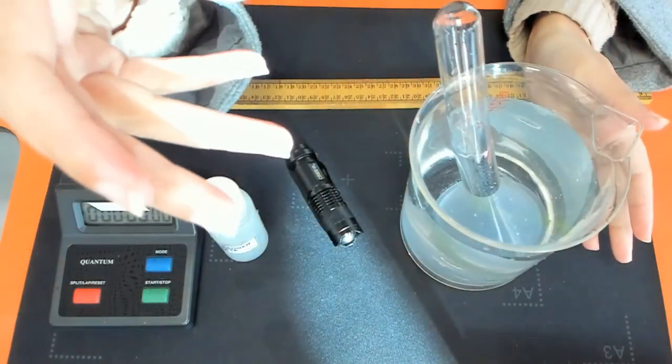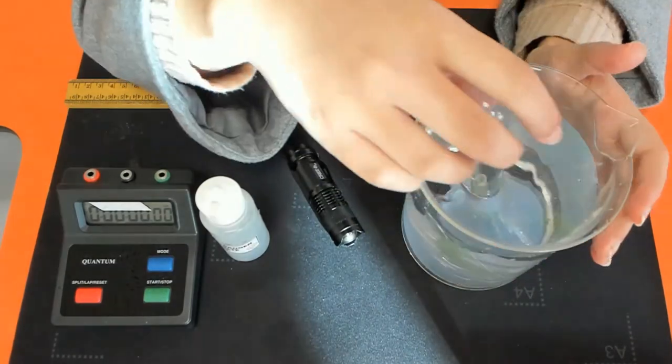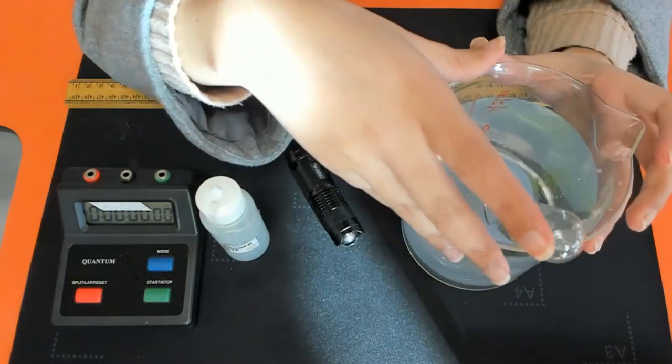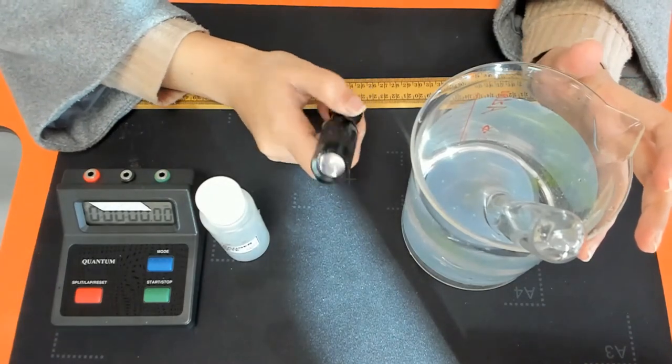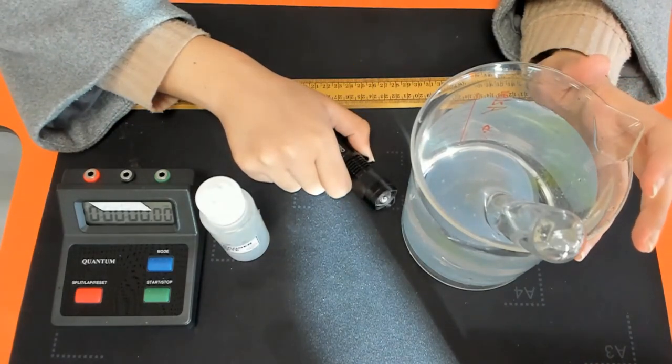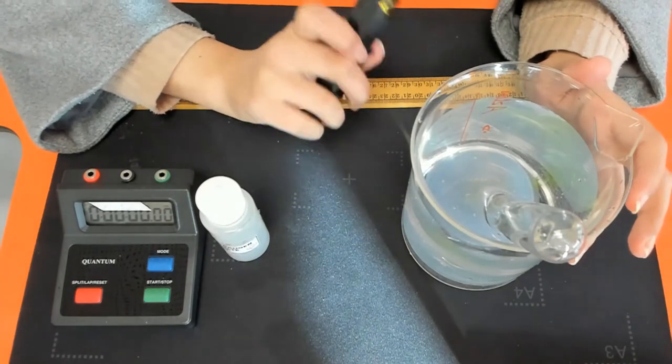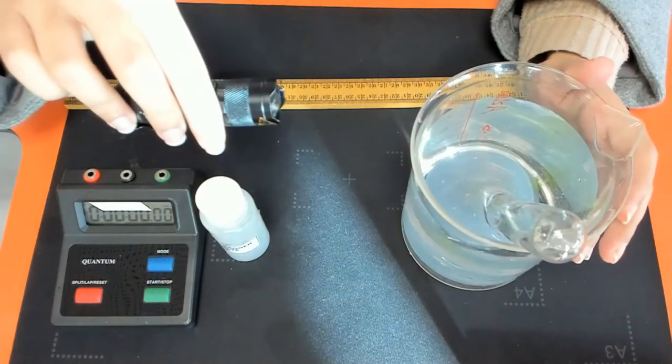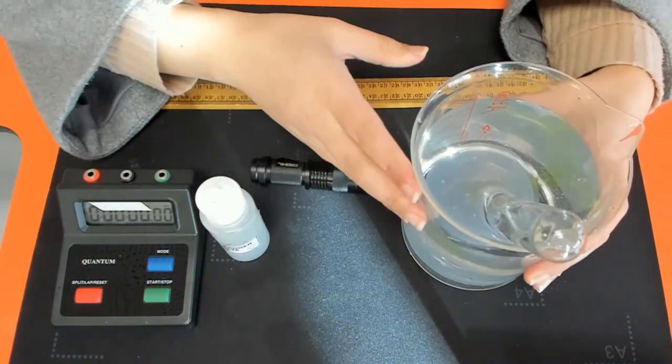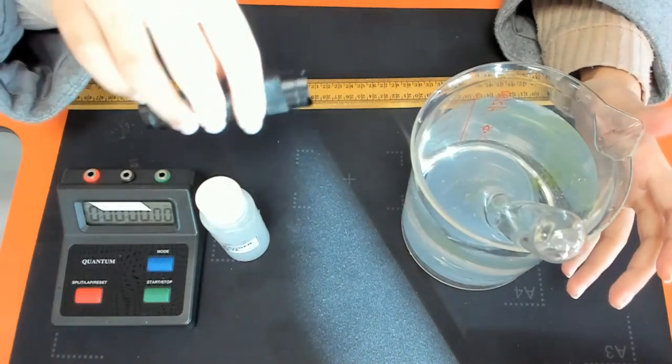The pondweed is what we'll be photosynthesizing. In terms of this apparatus I've already set up, the reason that we have a beaker filled with water is because often when we use a light source like a lamp, they can actually release some heat or thermal energy as well as light energy. We want to avoid this because we only want to investigate the effects of light intensity. So therefore the beaker filled with water acts as a barrier and ensures it's just light intensity having an effect.